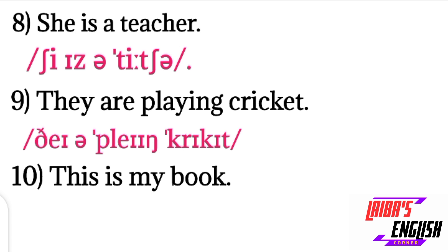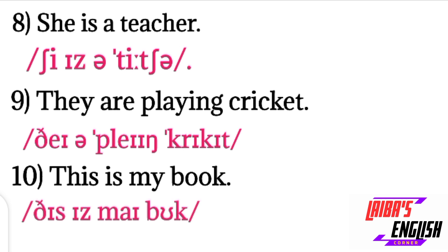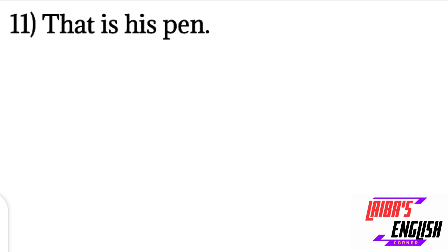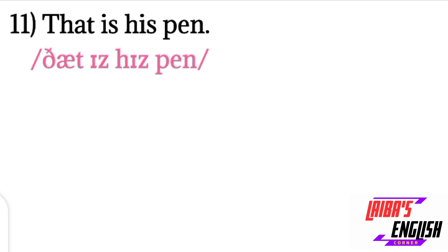Next: They are playing cricket. 'They': the 'th' sound and the 'ey' diphthong like in 'play.' 'Are' with schwa. 'Playing': P sound, then the 'l' sound, 'ey' diphthong, and 'ing' nasal sound. 'Cricket': K, R, short 'I' sound, K, short 'I' — that small 'I' is not the long I sound but the short 'e' sound represented with a small I — then T.